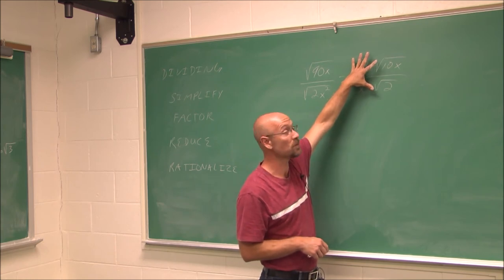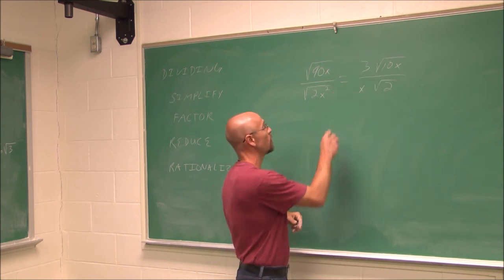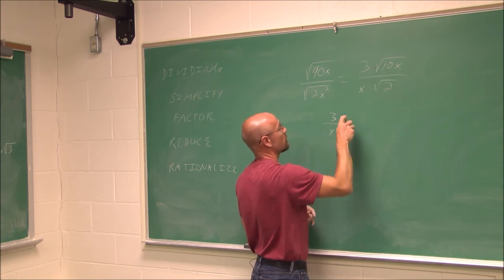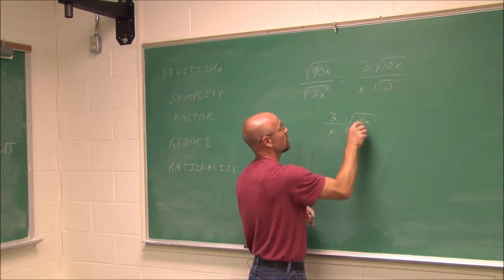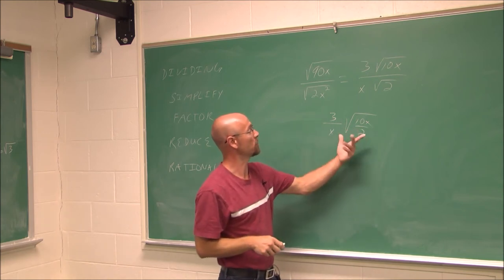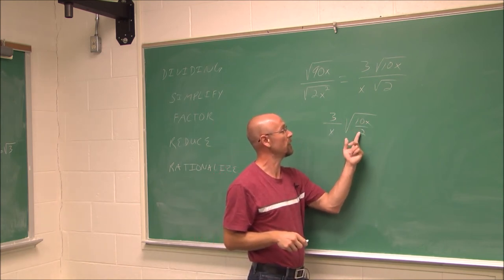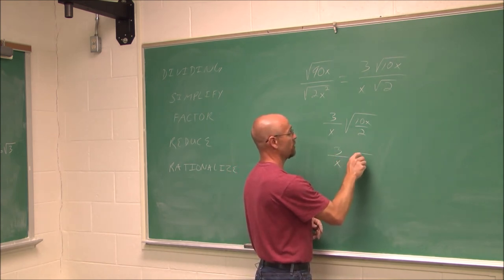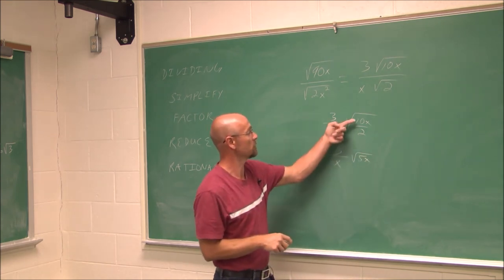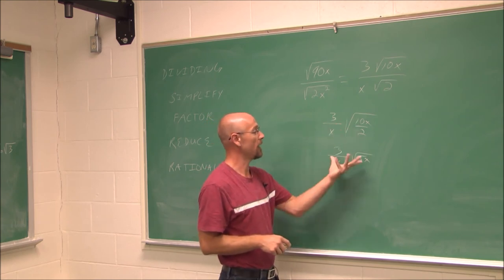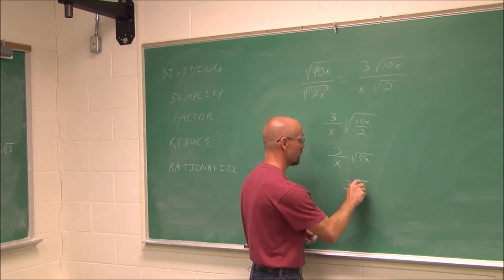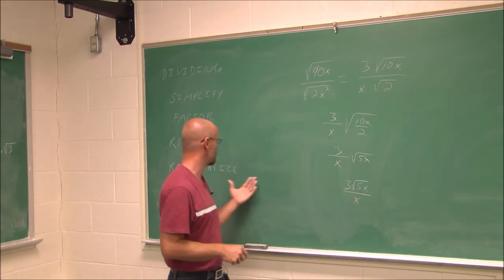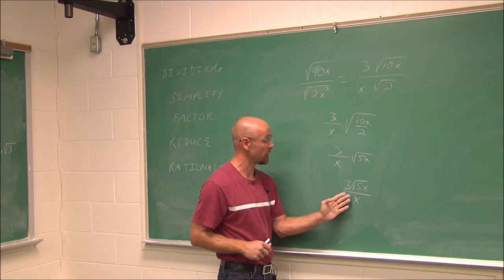I still want to rationalize this denominator, but maybe I can reduce something inside of it — I'm going to use the quotient rule. Because both of these are under a square root, I can split it up. 10 over 2 reduces to 5, so I'd have the square root of 5x. This reduces to 5x, and now I can put it back together: 3 times the square root of 5x over x. Notice my denominator is now rationalized.